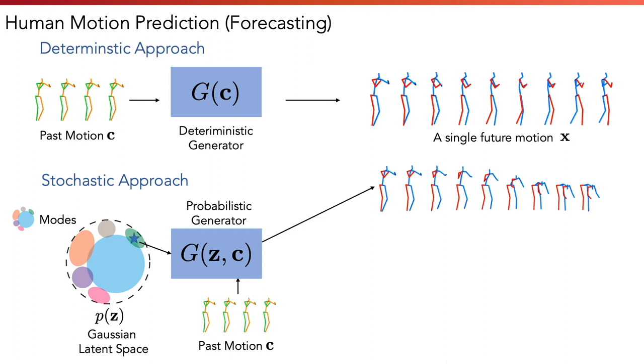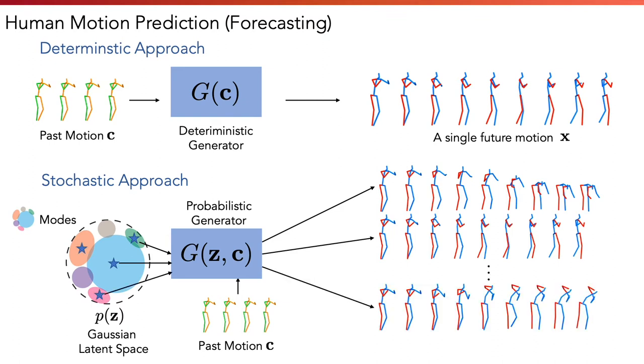By mapping latent codes from different modes with the generator, we can obtain different types of future motion samples.